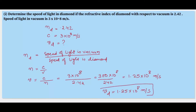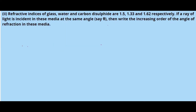This is the answer to our first part: the velocity of light in diamond is 1.25 × 10⁸ m/s. Let's take up the next question. The refractive indices of glass, water, and carbon disulphide are 1.5, 1.33, and 1.62 respectively. If a ray of light is incident in these media at the same angle theta, write the increasing order of the angle of refraction.